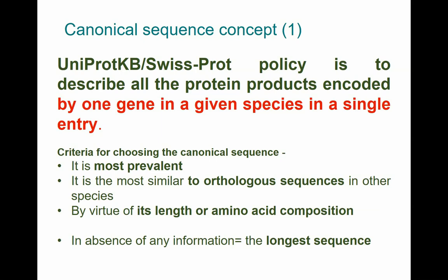How do you decide which isoform is the canonical one? A little bit like RefSeq, you make rules that are mostly okay, sometimes terrible, but that's reality. The rules are: the most prevalent one, most similar to orthologues in other organisms, the longest with the most knowledge. They also do some amino acid composition scoring to make sure it's not wrong. And if none of those criteria apply, just go for the longest sequence.